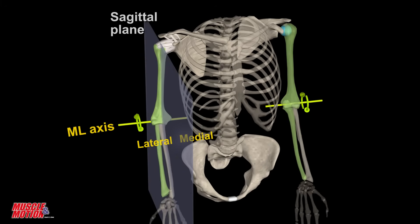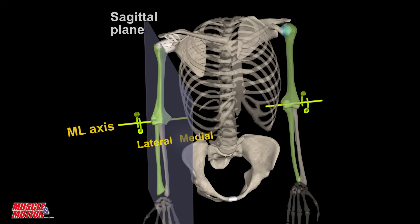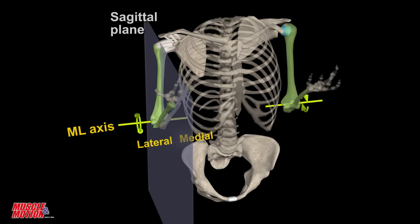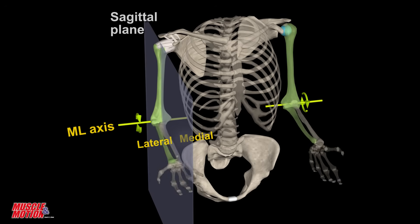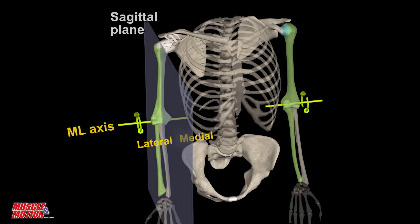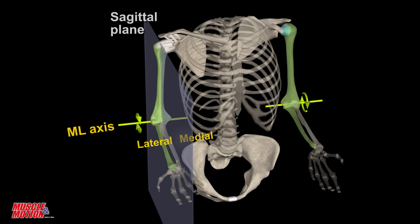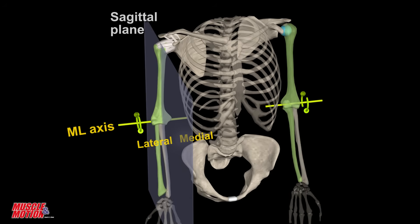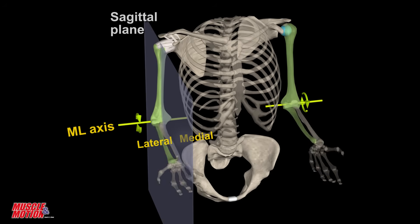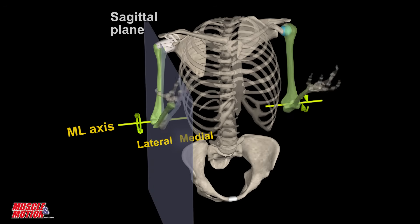In the elbow example, the forearm moves in the sagittal plane of motion as the elbow joint flexes and extends. Because flexion and extension occur in an anterior and posterior direction, respectively, the axis of rotation is perpendicular to it and projects through the joint in a medial-lateral or side-to-side direction.